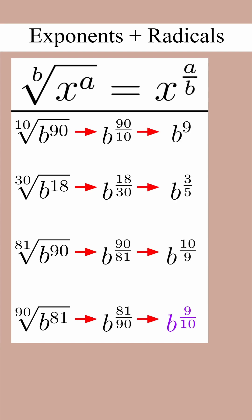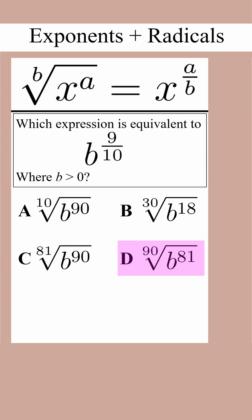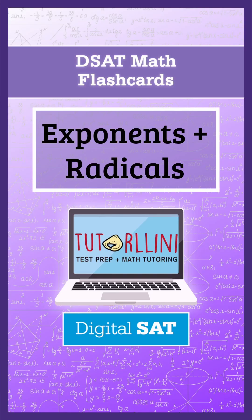Once we do that, I notice that choice D was really b to the 9 tenths, just in disguise. This means choice D is the answer to the question. Pause this video and see if you can remember this important DSET math concept.